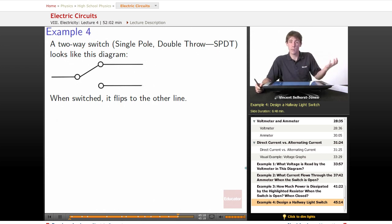We've got a two-way switch. So remember how I talked about there being other switches? This is one of them. So a two-way switch looks like this diagram. What that means is when you switch it, it flips to the other line.